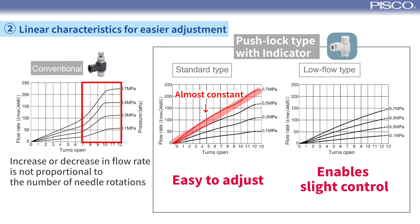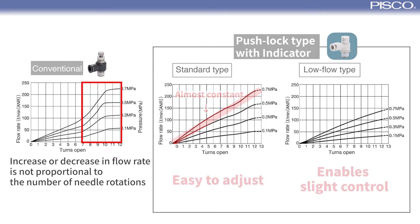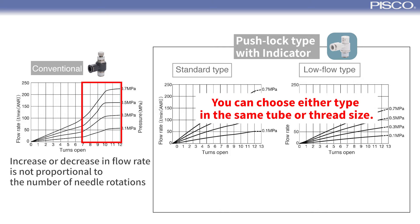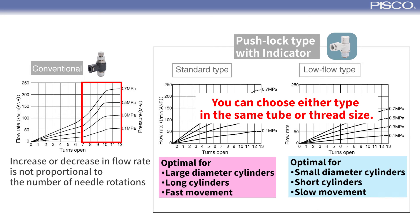The low flow type allows even finer adjustment than the standard type because the increase or decrease in flow rate per rotation is smaller. You can choose either standard or low flow type for the same tube size and thread size depending on the cylinder diameter, stroke, and speed.